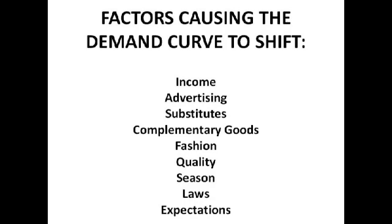Moving on now to complementary products, which are goods that are consumed together — like shampoo and conditioner, or iPod and headphones. Say the price of the iPod falls — you're more likely to want to buy the iPod, and then because you've got the iPod you need headphones. So demand for headphones will increase as well. When the price of a complementary good falls, there's an increase in demand for the original good and thus a right shift of the demand curve.